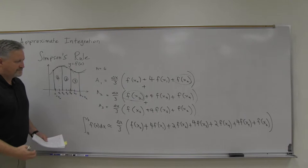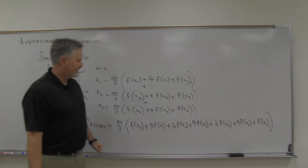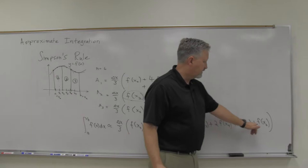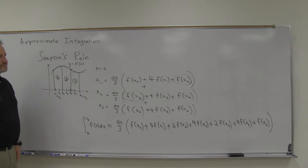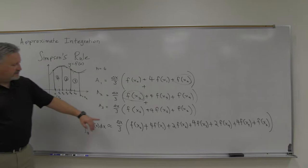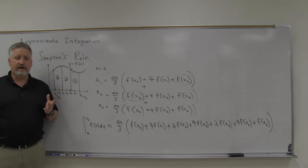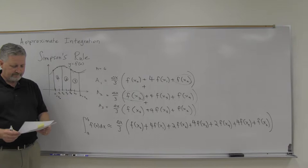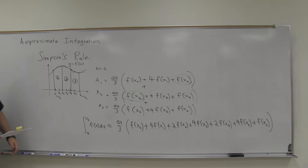That's interesting. In the trapezoidal rule we had two of each middle one, but in Simpson's rule you've got 4, 2, 4, 2, 4 — it alternates between 4 and 2. So just another different way of approximating an integral. We've got delta x divided by 3 — it's sometimes referred to as Simpson's one-third rule — to help you remember, it's divided by 3 instead of 2, as in the trapezoidal rule.